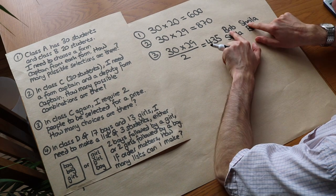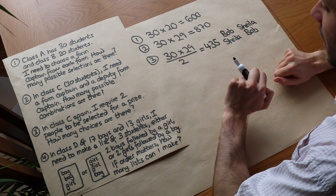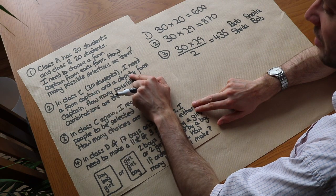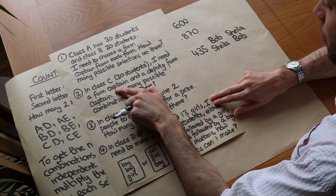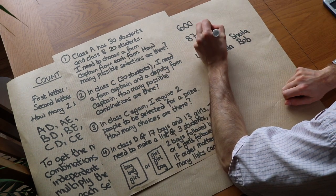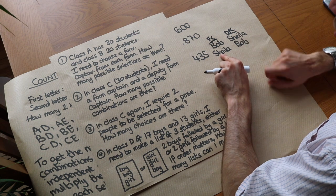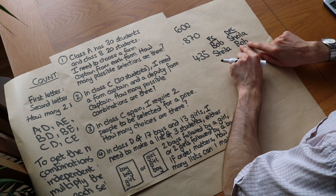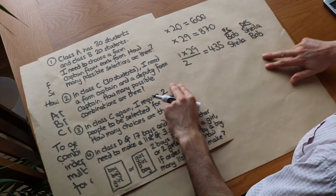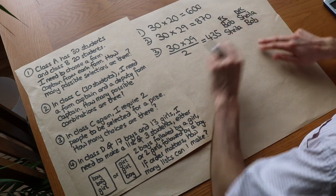If you don't care about the order of the people in your selection of two, then you divide by two. But if you do care about the order, you don't divide by two. For example, when we needed a form captain and a deputy form captain, having Bob as form captain and Sheila as deputy is different from Sheila as form captain and Bob as deputy — that's a different scenario. The crucial difference is: do we care about the order of the two things?